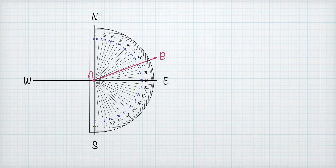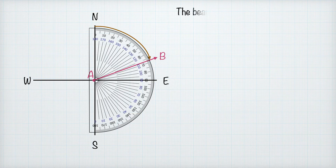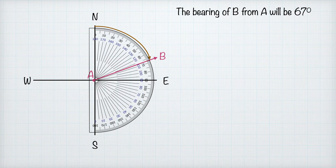Notice how we position the protractor so that north faces north. We use the outside numbers of the protractor because the outer numbers run clockwise and the inner numbers run anti-clockwise. We measure clockwise from north to the line joining A and B, and the bearing from A to B is 67 degrees.